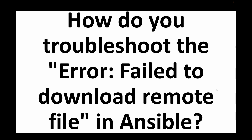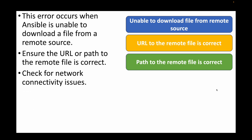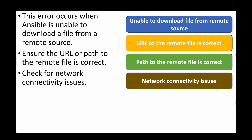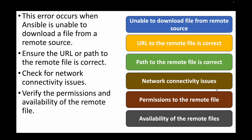The next question is: how do you troubleshoot the error 'failed to download remote file' in Ansible? This error occurs when Ansible is trying to download a file but cannot do so from the specified remote path. Ensure you are giving the right URL or path to the remote file, check for any connectivity issues to verify you can access the URL or path, and verify the permissions and availability of the remote file. Ensure the file is available, you have the right path, and there are no network issues.